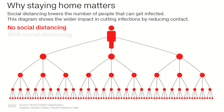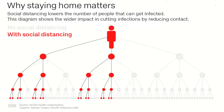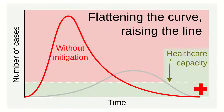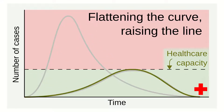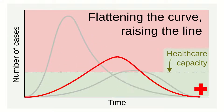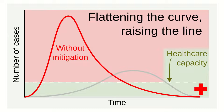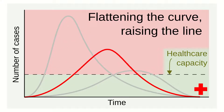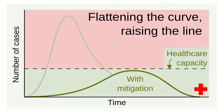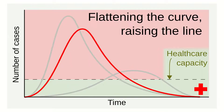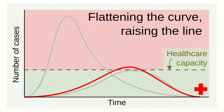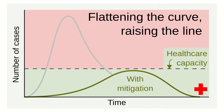By reducing contact through social distancing, fewer people are likely to be affected. The lockdowns and social distancing are helpful in flattening the curve, which aims to reduce the number of people needing healthcare facilities at the same time.